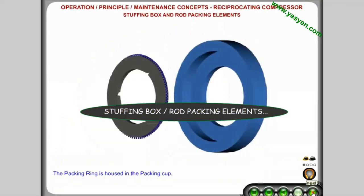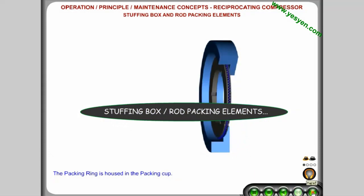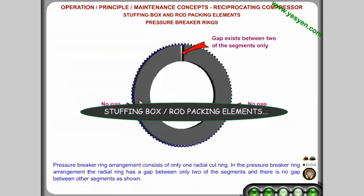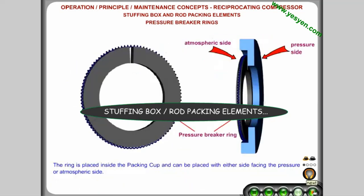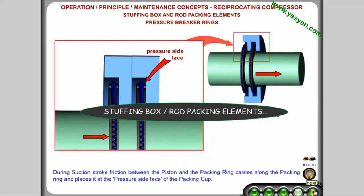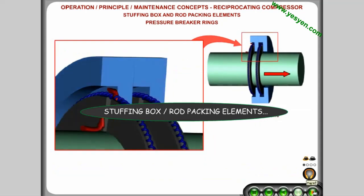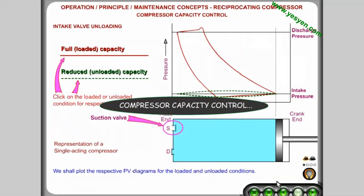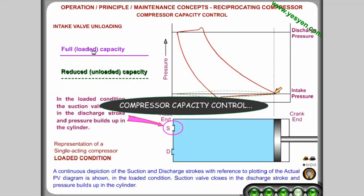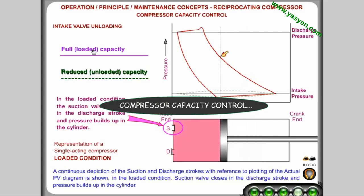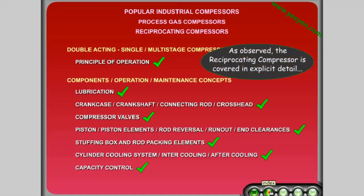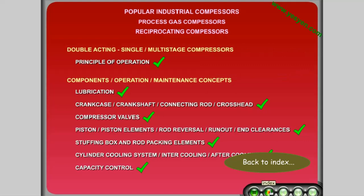Stuffing box and rod packing elements are also covered, along with compressor capacity control. As observed, the reciprocating compressor is covered in explicit detail. Back to index.